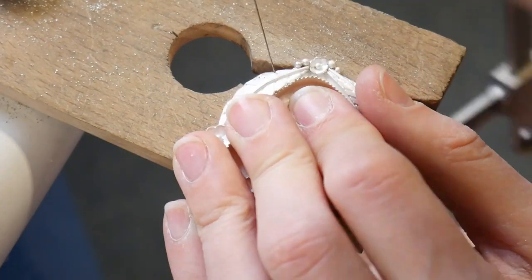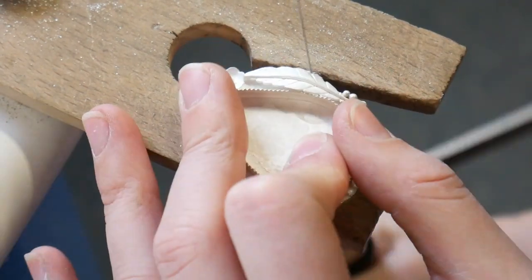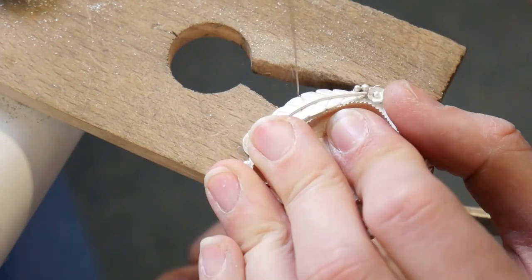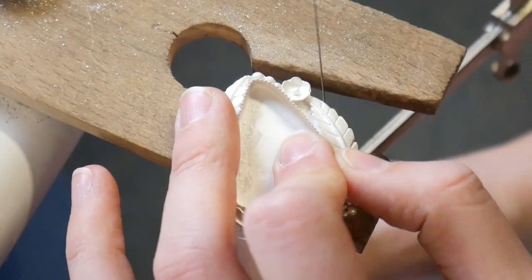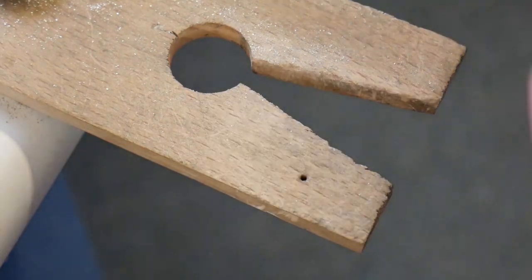Once I have my piece all sawed out, I then like to go back once again with my saw blade and really try to cut into those tight corners and crevices and fine-tune the shape of the piece. I like to look at my saw blade as a tiny little file to get into any tight corners.